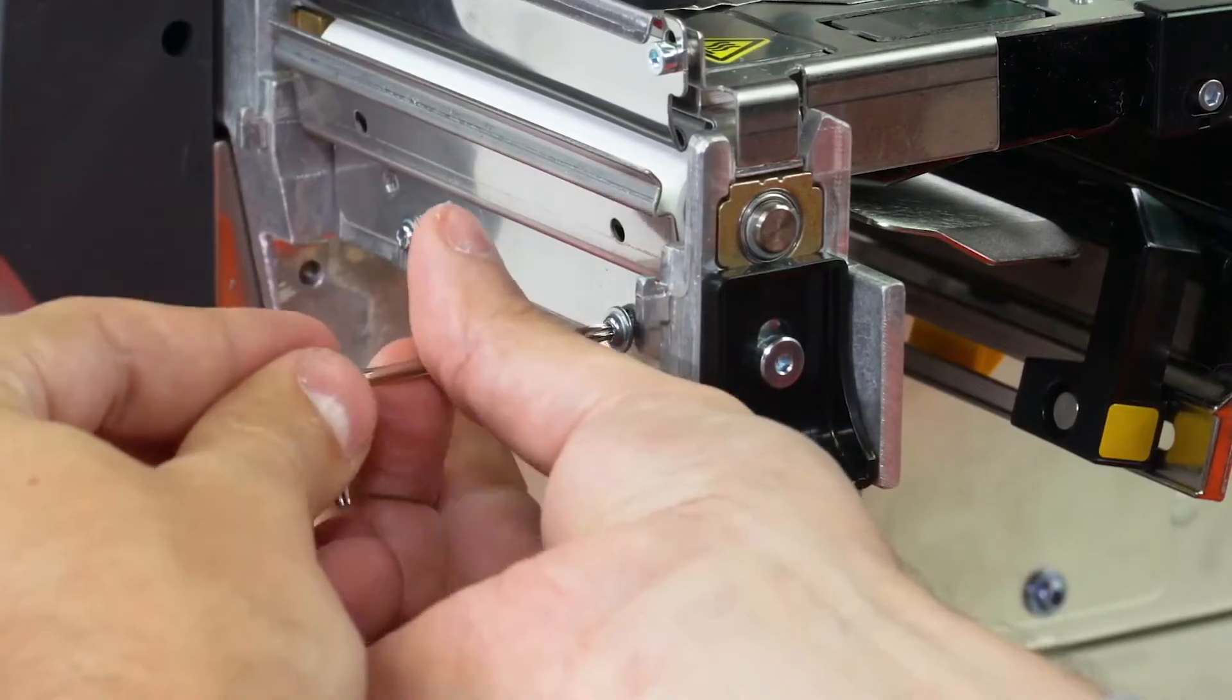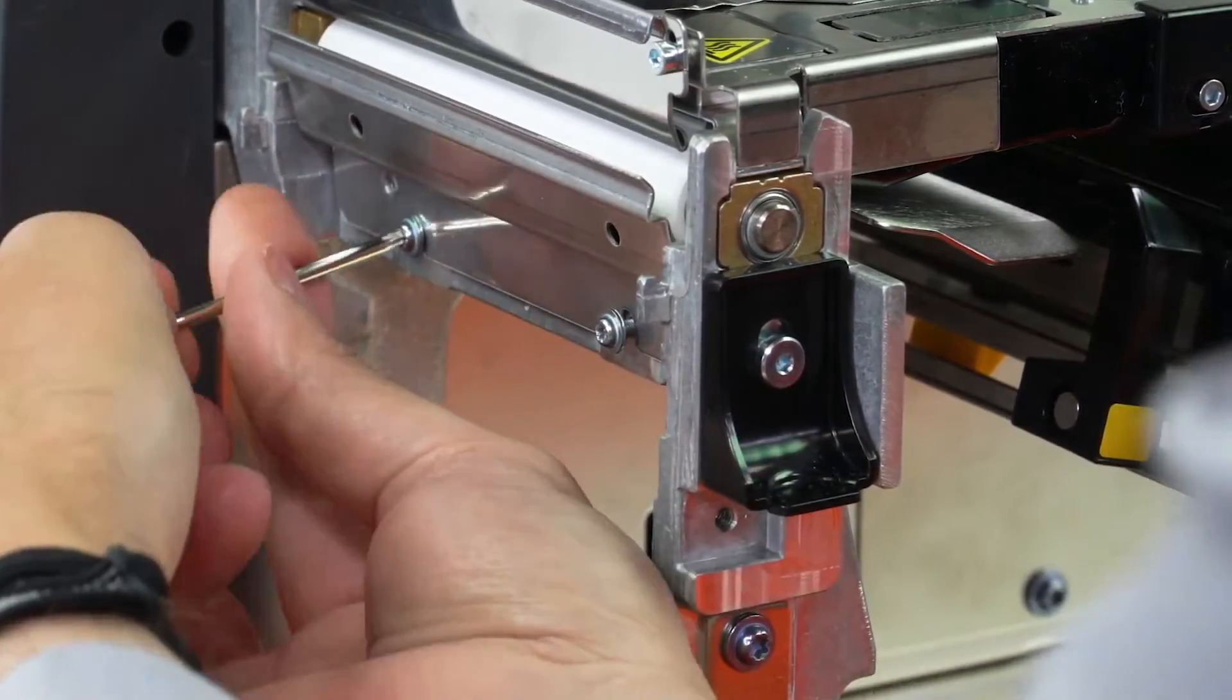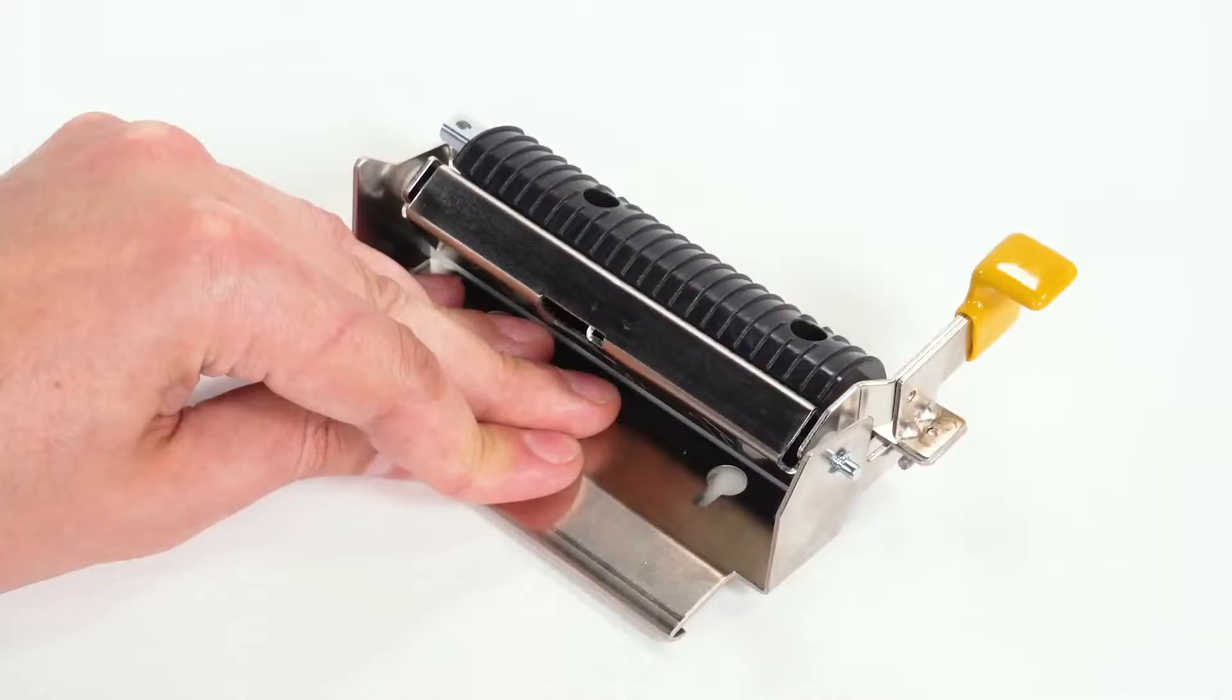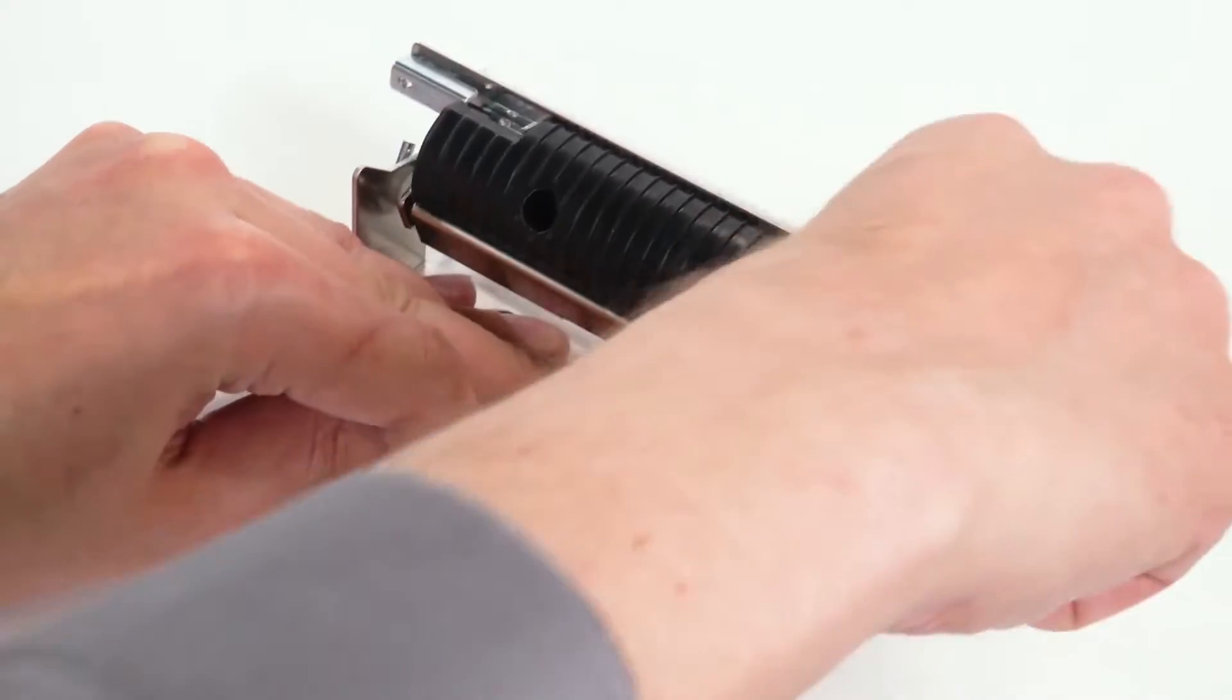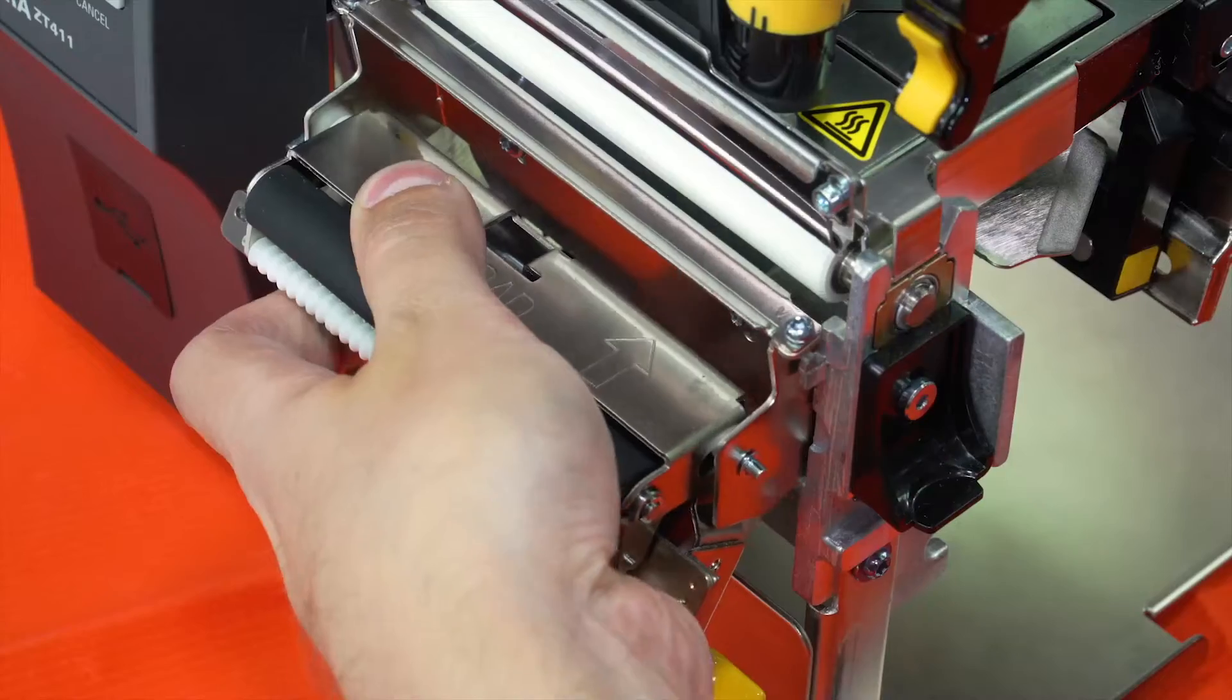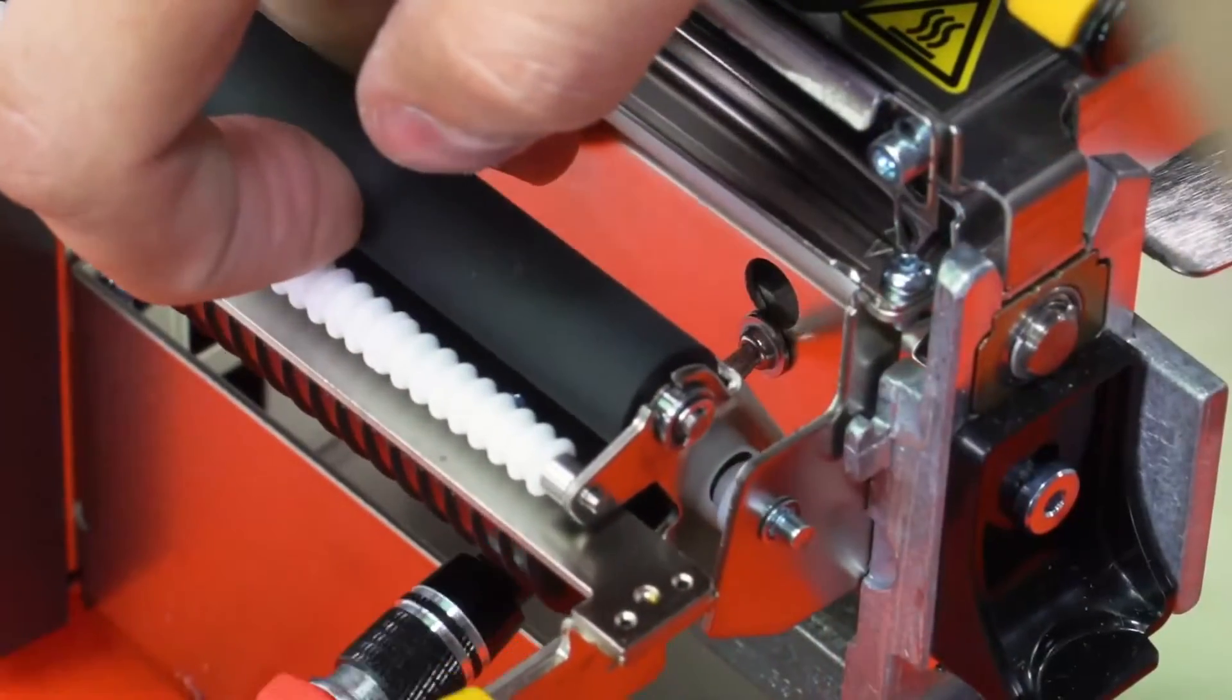Loosen the two mounting screws about a quarter of an inch or seven millimeters. Remove the tear plate. Open the peel roller. Insert the peel assembly over the two screws and lift up. Tighten the mounting screws.